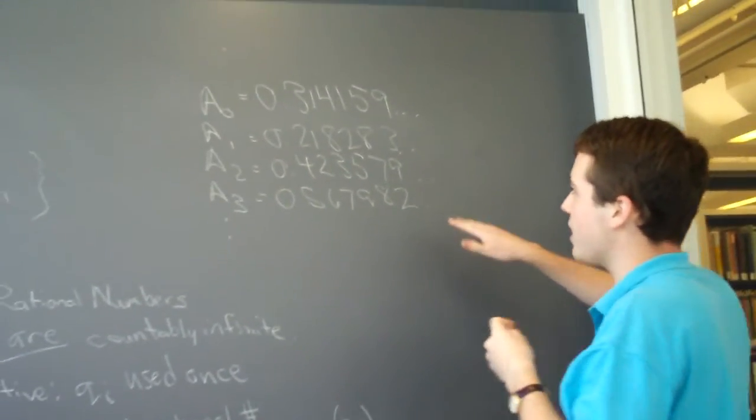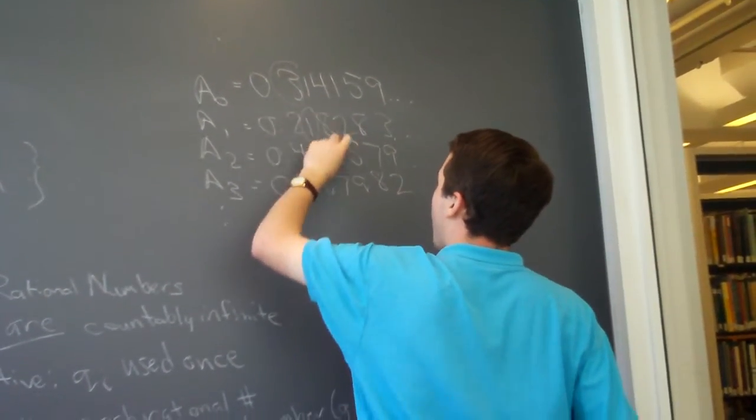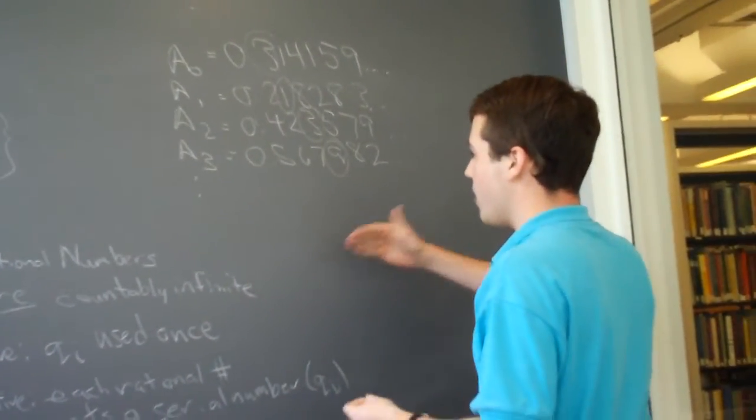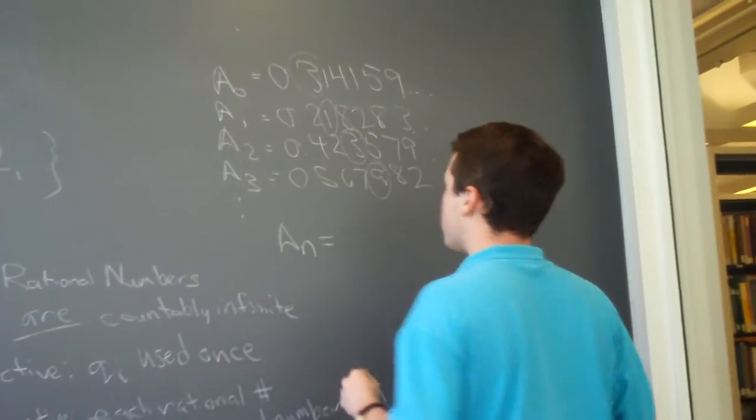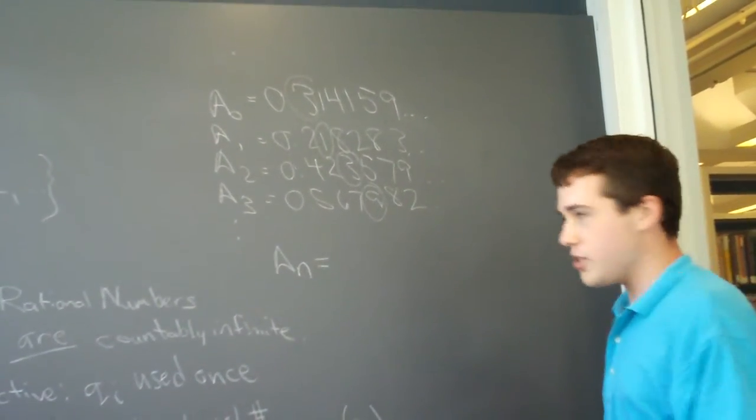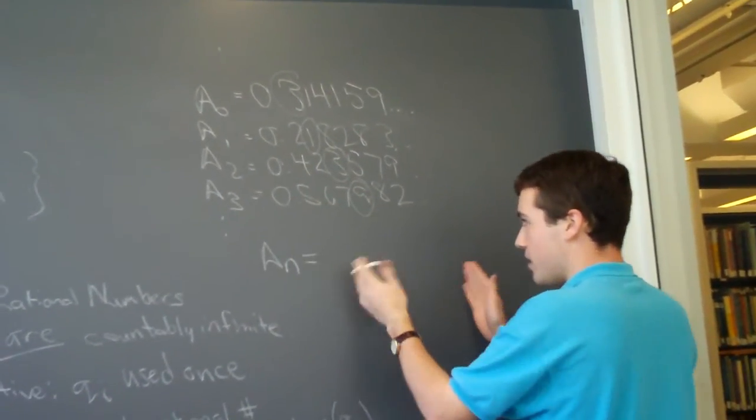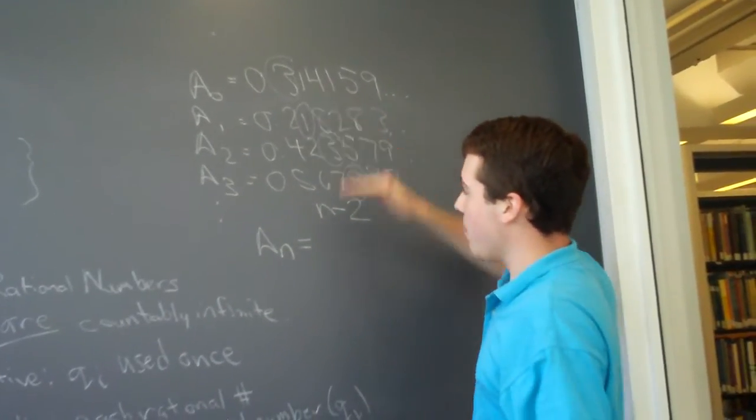Once you've devised a list like this, you can pick out every number on the diagonal of the list, and make yourself a new decimal, in which you change each one of the numbers following a certain rule. Say, in this case, the digit equals the digit up here minus 2.